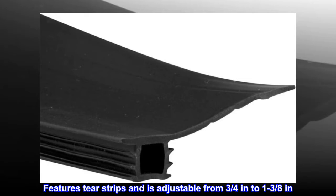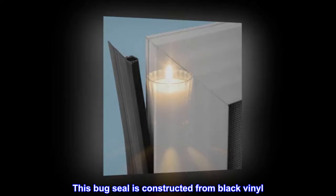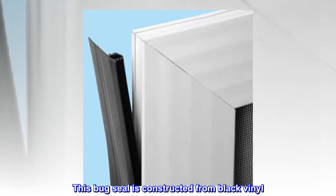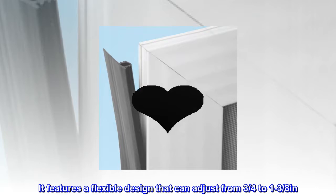This bug seal is constructed from black vinyl. It features a flexible design that can adjust from 3/4 to 1-3/8 inches. This seal helps prevent insects from crawling under your screen doors.